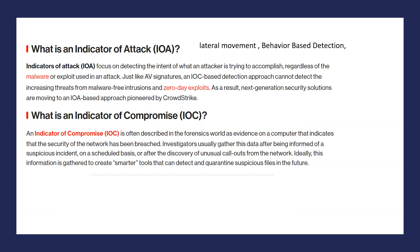All these processes come under the Indicator of Attack — lateral movement before the attack is executed. Sometimes behavior-based detection is involved, like when an attacker has compromised a user account such as an HR user, and they are accessing your resources via PowerShell or CMD, typing commands like 'netstat' or 'whoami'. The behavior is changing — they haven't accessed anything normally from your network, but they are trying to hack it. All of this comes under Indicator of Attack.